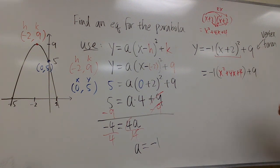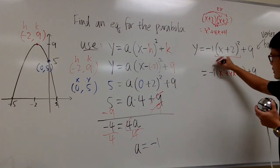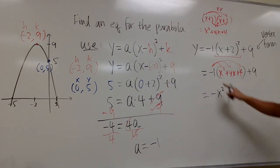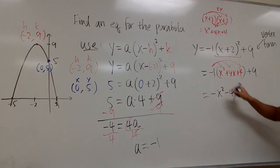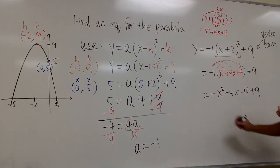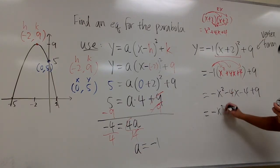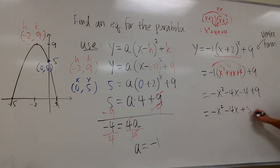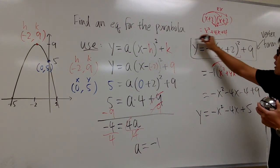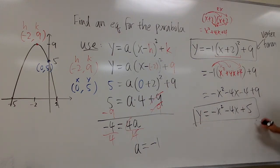So this is going to have negative 1 in the front. Open the parentheses: x plus 2 squared is x squared plus 4x plus 4, and then we have the plus 9. Next we distribute the negative into the parentheses. Negative 1 times x squared is negative x squared, negative 1 times 4x is negative 4x, negative 1 times 4 is negative 4. Don't forget, we still have the plus 9. So combining: negative 4 plus 9 is positive 5. Altogether, this is negative x squared minus 4x plus 5. And this right here is the equation in the standard form. And that's it.